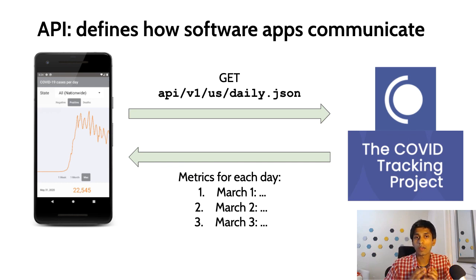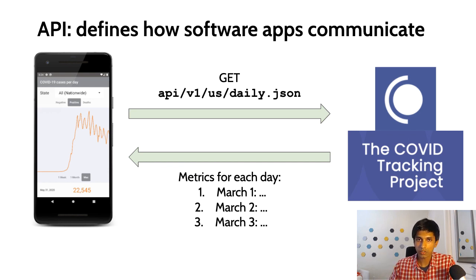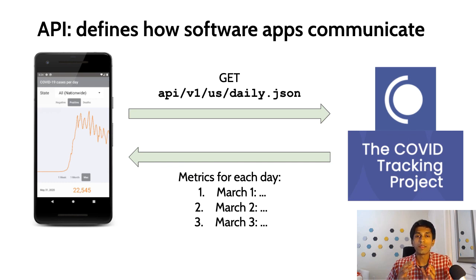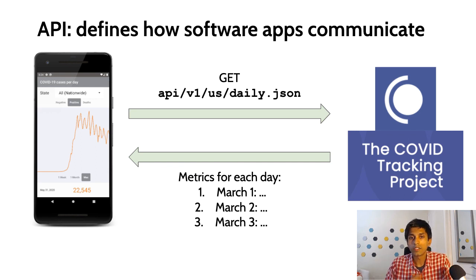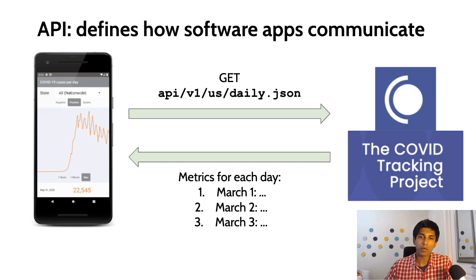We're going to be making a GET request on this particular URL: API slash v1 slash us slash daily.json. What that represents is we want to retrieve the daily data of the number of coronavirus cases nationwide. The COVID Tracking Project will respond with JSON data, and that JSON data will contain the metrics for each day up until the most recent day.